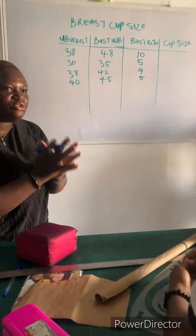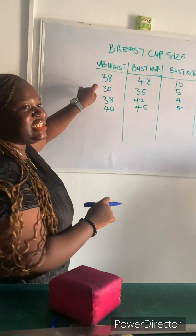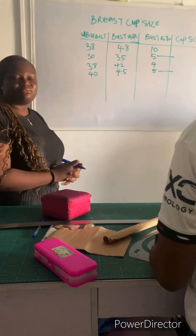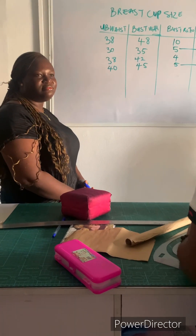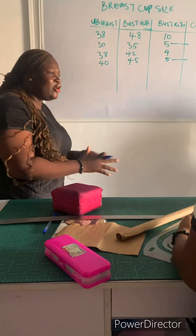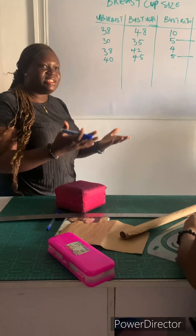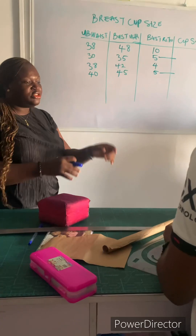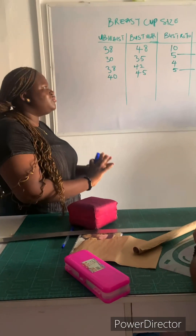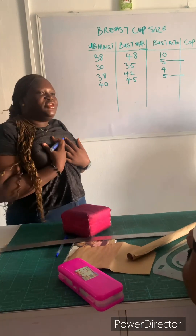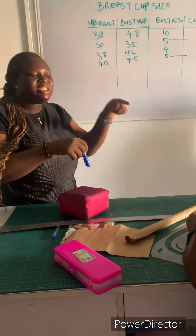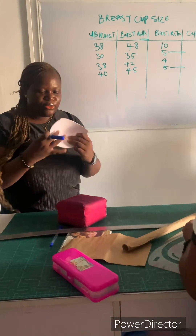So if you want to tell me the cup size to use for this person — shockingly, this person of size 38 will use the same cup as this person. Isn't that interesting? You use the same cup size as this person. Cup sizing based on numbering in the market depends on the brand. The people making it write their numbers just to differentiate, so you know that this one is bigger than that one. As a dressmaker, it's up to you to know which cup size works for your customer.